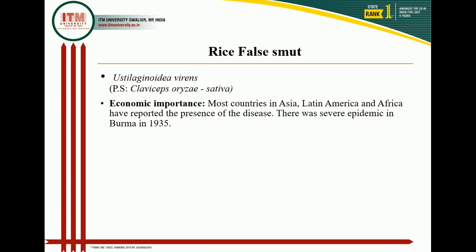The first disease is rice false smut, caused by Ustilaginoidea virens, a fungus. The perfect state of Ustilaginoidea virens is Claviceps oryzae-sativae. The perfect stage is the stage where sexual reproduction occurs — when sexual reproduction is performed, we call it the perfect stage.